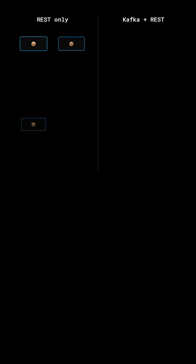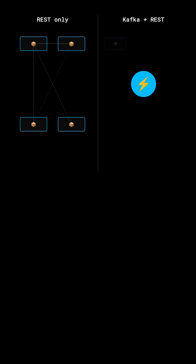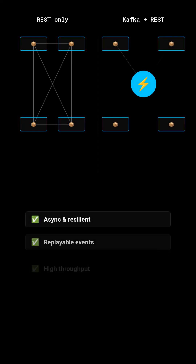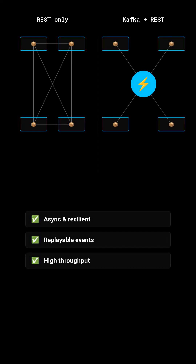REST is fine for request-response, like get user details. But for events like order_created, payment_failed, or email_sent, Kafka gives you asynchronous processing, replay of old events, and insane throughput compared to chaining REST calls.